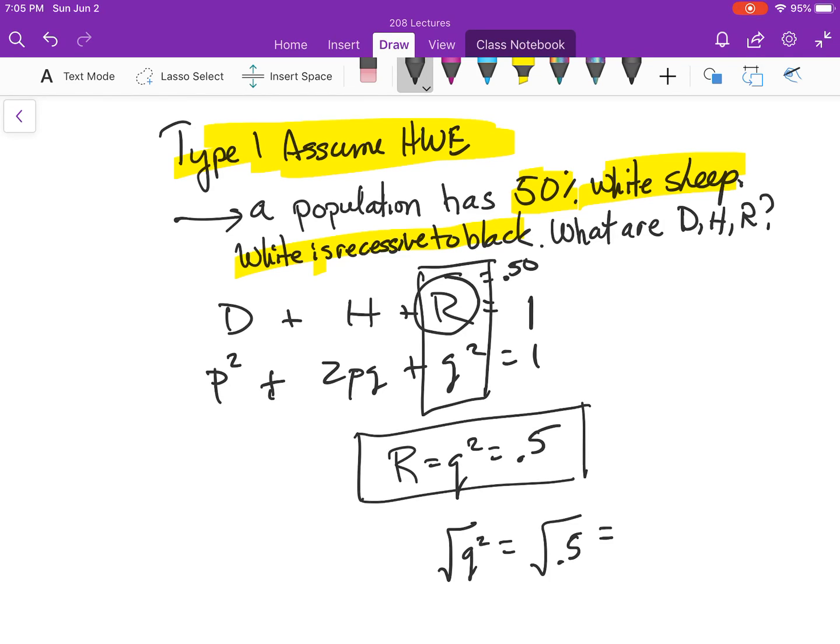Now I'm going to get out my calculator here and find out the square root of 0.5. So I'm going to write 0.5. Square root 0.7. So that is what Q equals.